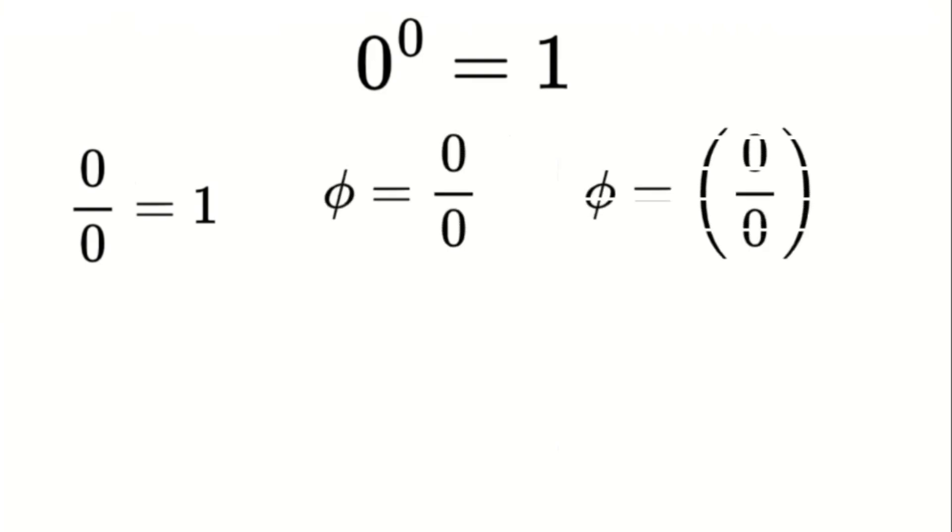We've already established that 0 to the power of 0 equals 1. However, simply treating 0 divided by 0 in the same way can lead to inconsistencies within our system. Instead of considering it as a standard fraction, we are defining it as its own fundamental unit, which we called phi: phi equals 0 divided by 0. This means that in our singularity mathematics, phi behaves as a basic indivisible unit rather than a fraction that can be simplified. With this definition, we establish a key property that helps maintain consistency within our system.